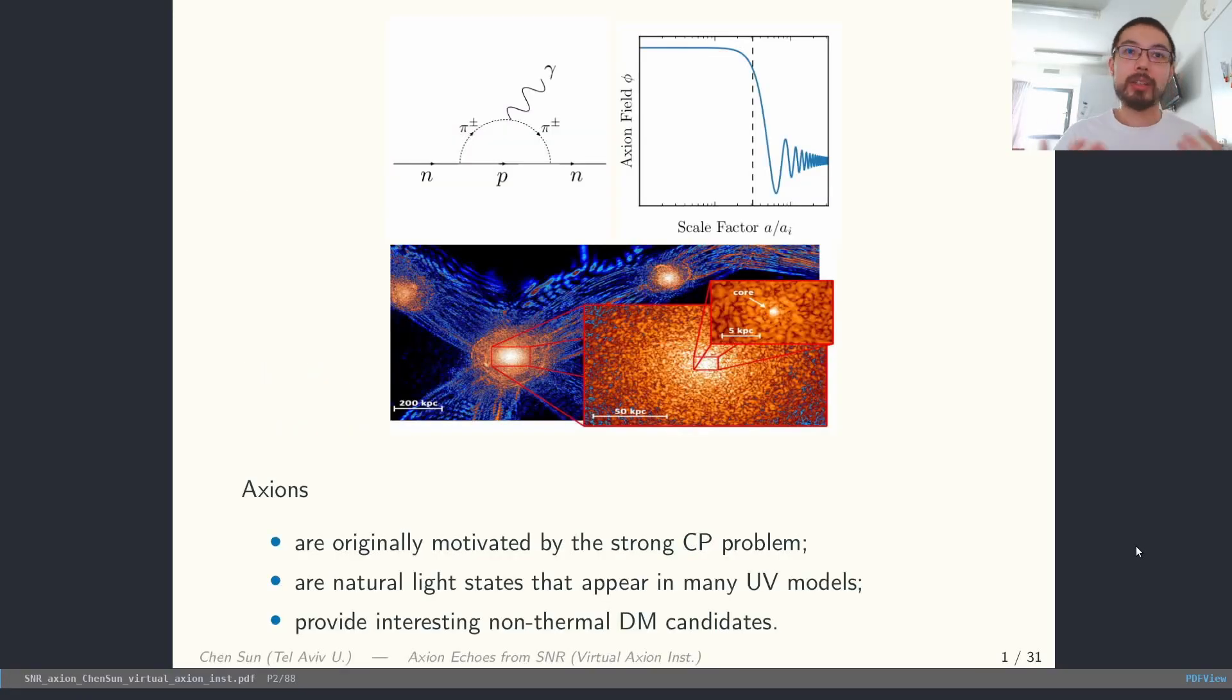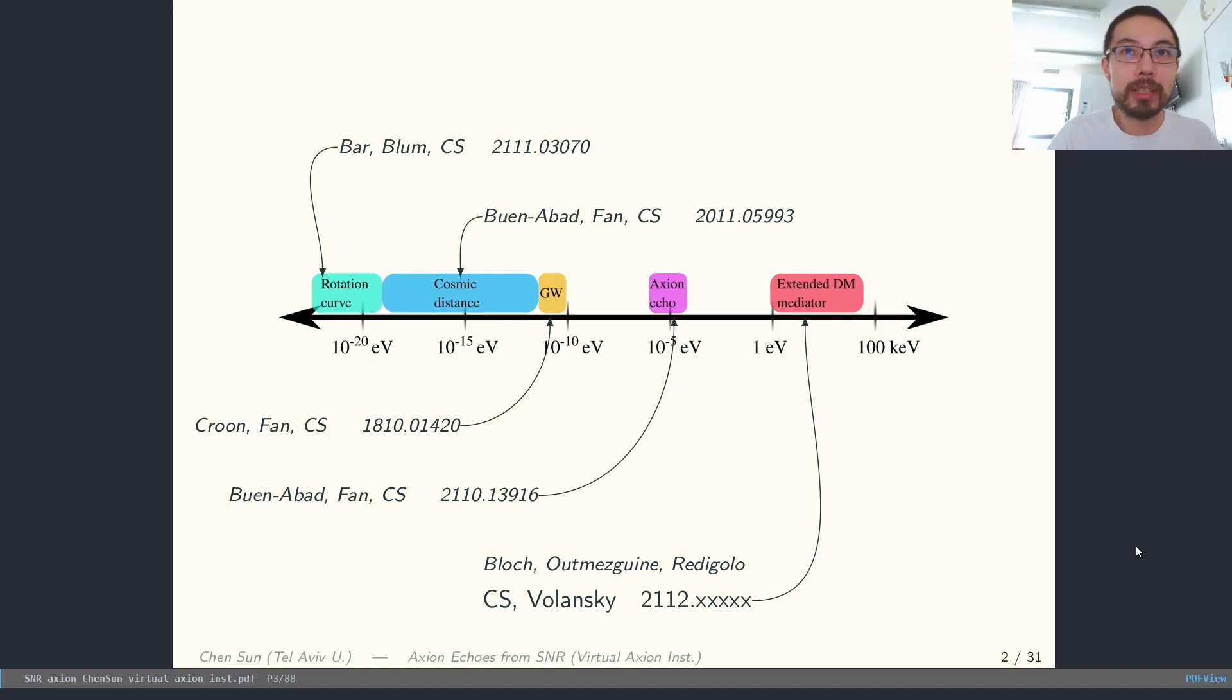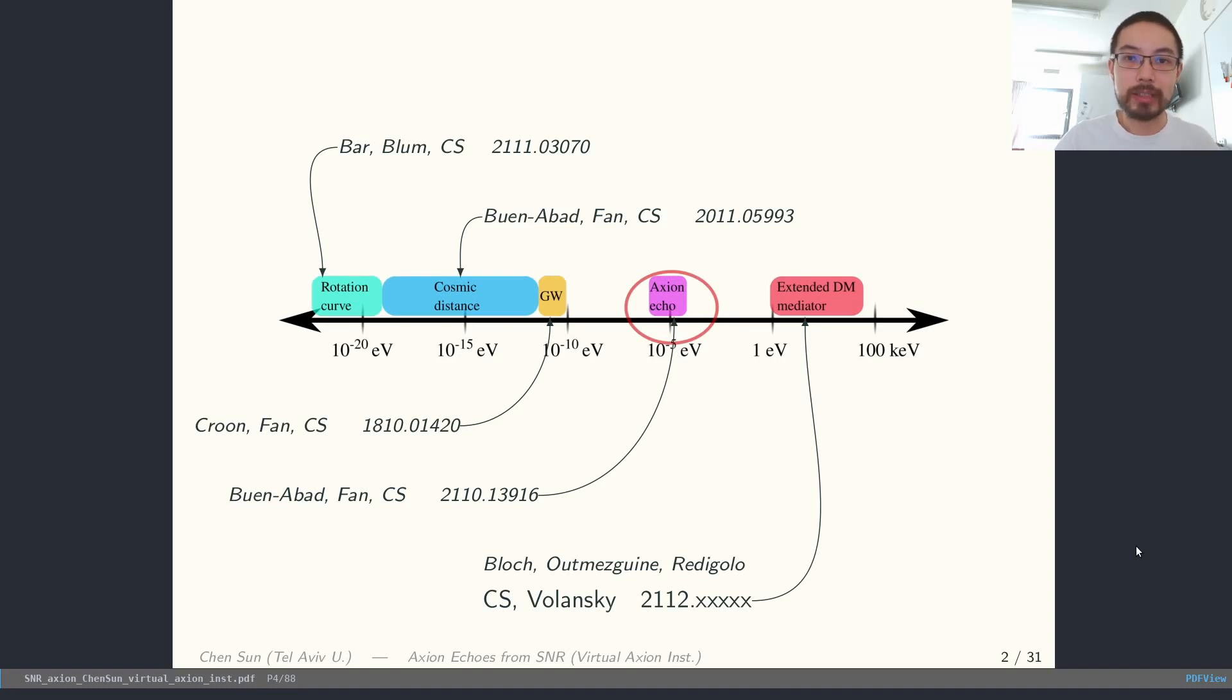We know that axions were originally proposed as the solution to the strong CP problem. But beyond the QCD axions, axion-like particles are naturalized states that appear in many UV theories, such as string theories. Phenomenologically, they provide interesting dark matter candidates that can be produced non-thermally. Because their mass can vary across many orders of magnitude, their existence can manifest very differently in astrophysical particle data. Just to name a few, these are some of my past work to discuss how to probe them when their mass falls into a certain range.